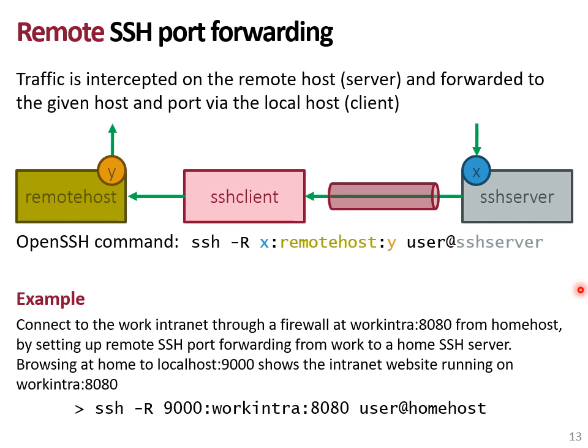Remote forwarding can be used, for example, to connect to the work intranet through a firewall from your home computer. The firewall will normally not accept connections directly to the work intranet on port 8080 from your home. However, by setting up remote port forwarding to an SSH server running at home from an SSH client running on your work computer, you can locally browse to localhost on a pre-configured port — for example 9000 — and forward that traffic to your work intranet at port 8080. If your firewall at work allows outgoing SSH connections, this will work and you can circumvent the firewall to browse your intranet from home.